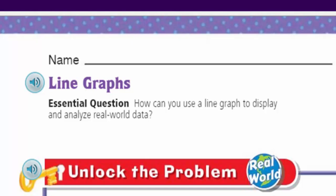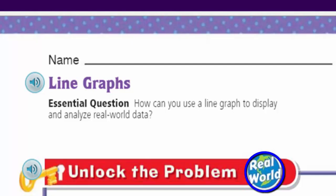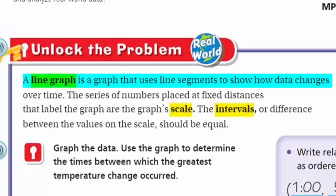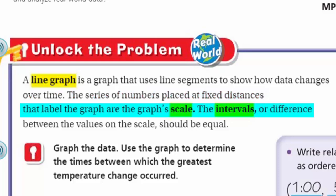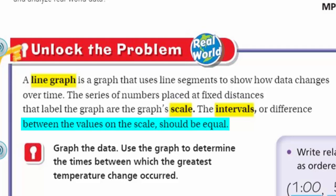Unlock the problem — it's a real world problem! A line graph is a graph that uses line segments to show how data changes over time. The series of numbers placed at fixed distances that label the graph are the graph's scale. The intervals, or difference between the values on the scale, should be equal.